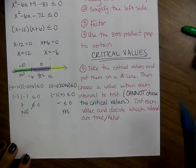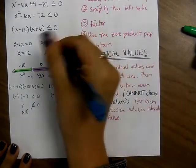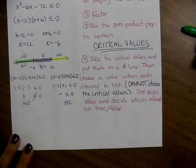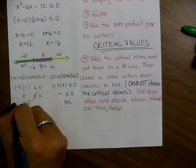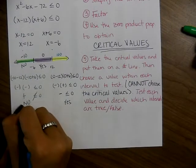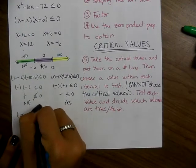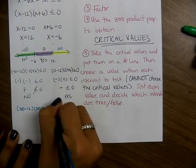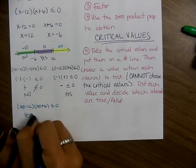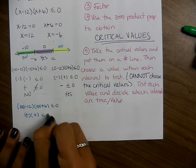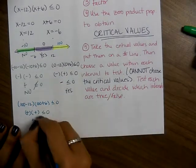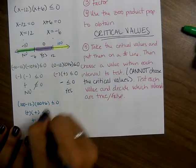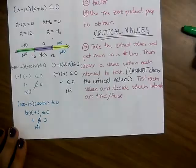Now the last interval — I'll choose 100. Plugging in: 100 minus 12 times 100 plus 6, checking if that's less than or equal to 0. This is a positive times a positive, which is definitely going to produce a positive. That makes this solution false — it doesn't work.